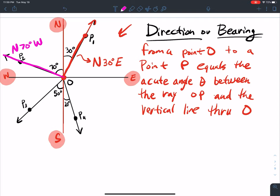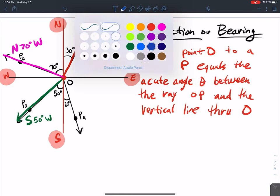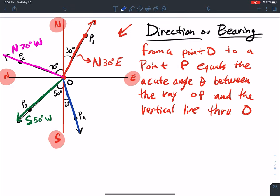If I was going to do P3 down here, I'm actually in the southern, so this is south 50 degrees west. And then this last one, P4, would be south 20 degrees east. That covers all the different ones here.